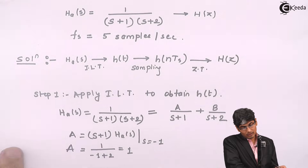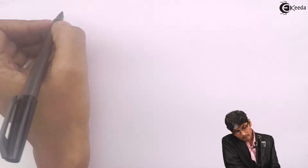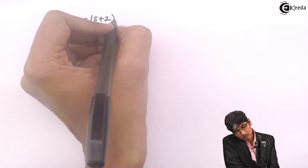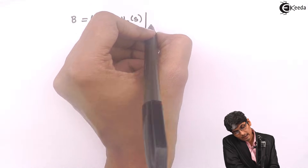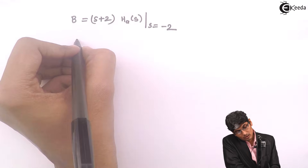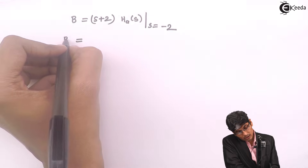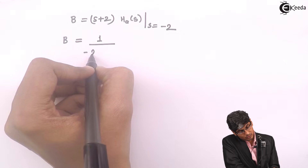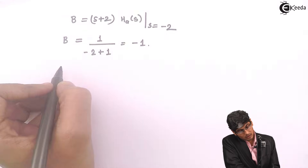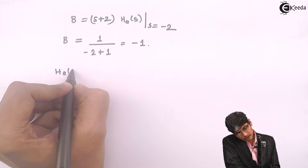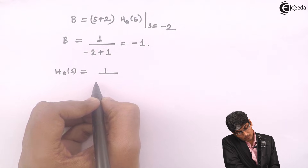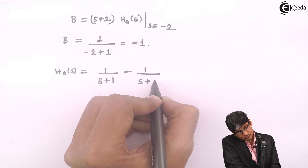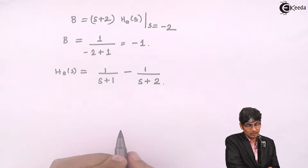For B: B = (S+2) · H_A(S) evaluated at S = -2, which gives 1/(S+1) at S = -2, so B = 1/(-2+1) = -1. Therefore, H_A(S) = 1/(S+1) - 1/(S+2), since the value of B is -1.